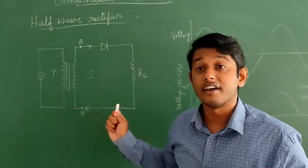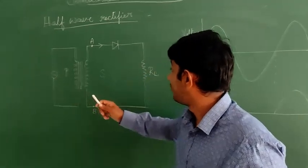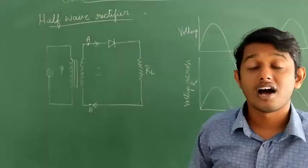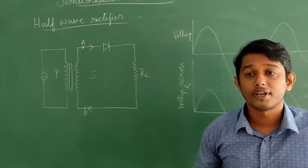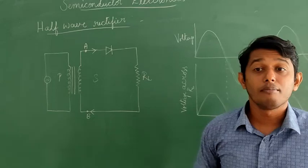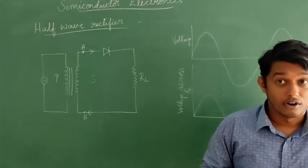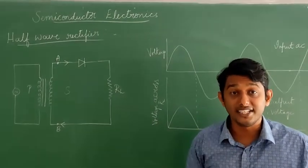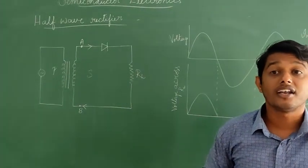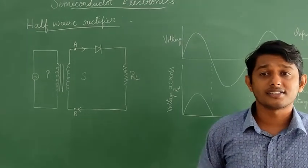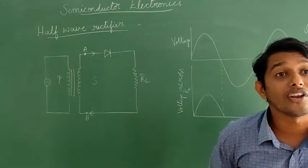This is the circuit of the half-wave rectifier. This is the transformer, this is the AC power source, this is the diode, and this is the load resistance RL. The AC to be converted into DC is fed to the primary of the transformer. The diode D and load resistance RL are connected to the secondary of the transformer.